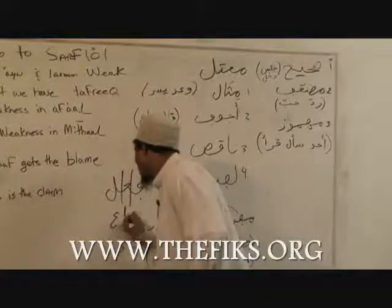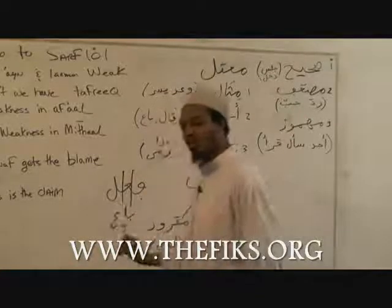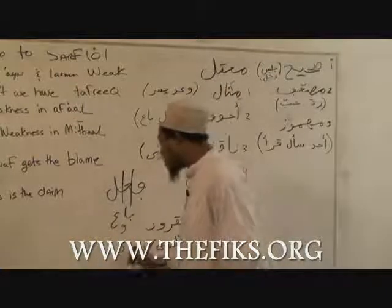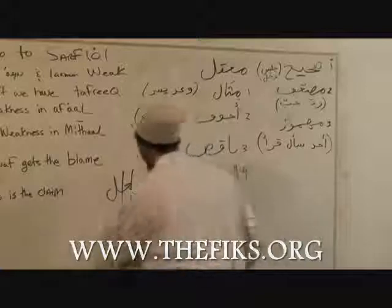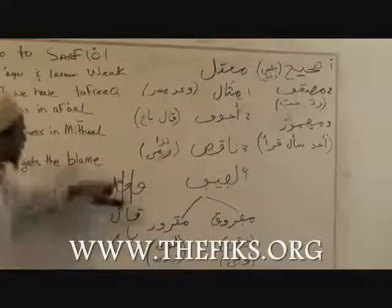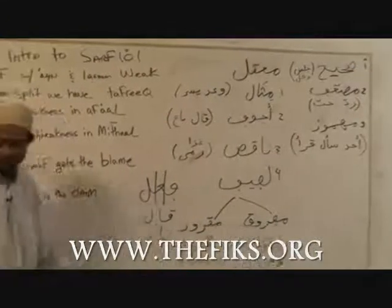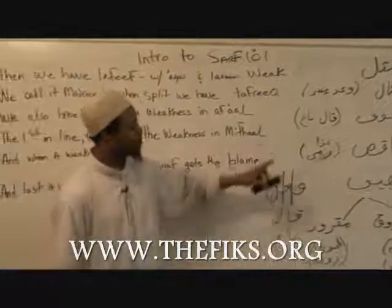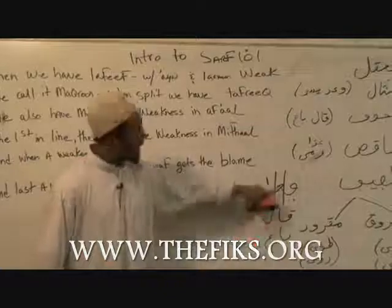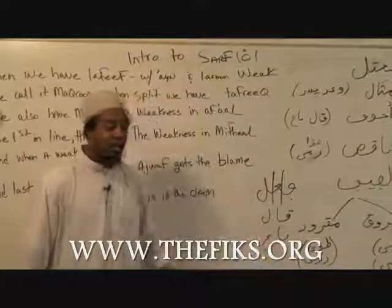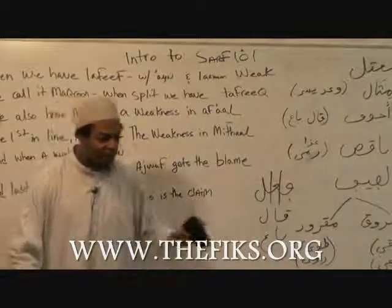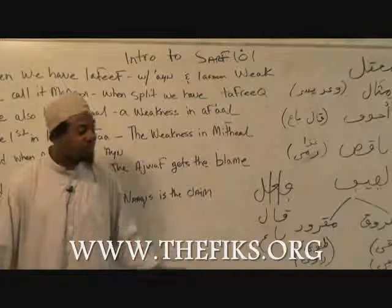So we would say ba'a yabi'u, wa'ala yaquulu — we have these different words like that. Because of this, the a'in of the letter — like we say qala or ba'a — the a'in of the letter has an alif here, so we call this a fa'alun ajwaf. The a'in of the letter has a weak letter — a weak letter is considered an alif, a wa, or a ya. If the a'in of the fa'alun has one of those letters, it's called ajwaf.